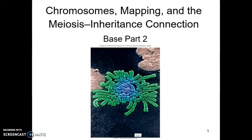In the first part of the lecture on chromosomes, mapping, and meiosis, when we're looking at the inheritance connection, we're talking about Thomas Morgan Hunt and his research with fruit flies and how he discovered that certain traits and variations are associated with the sex chromosomes, particularly the X chromosome of the 23rd pair in humans.